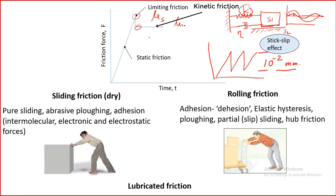We can achieve this by providing a coating. If we have one surface like this and another surface like this, we can provide a coating on one surface or both surfaces. There are many kinds of very durable coatings available for these kinds of tribological applications.